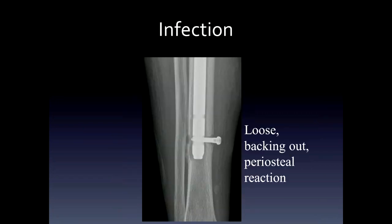Infection of screws is demonstrated by loosening with a loosened zone around the screw, but the white line seen around an aseptically loose screw may not be present in patients who have infection. Also, the presence of periosteal reaction can be seen with infection but not usually with aseptic loosening — at least not this irregular periosteal reaction.